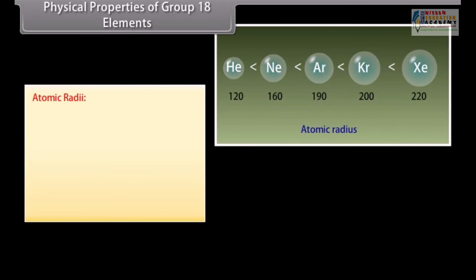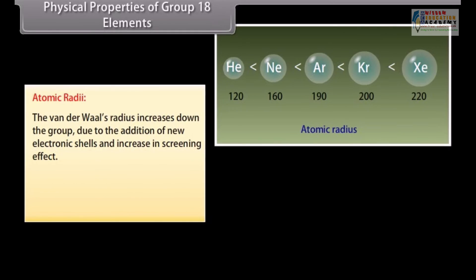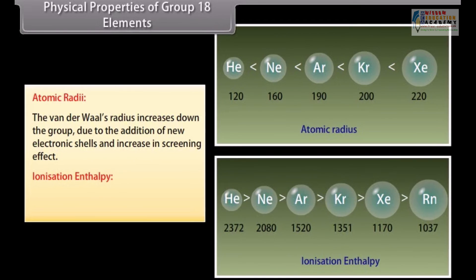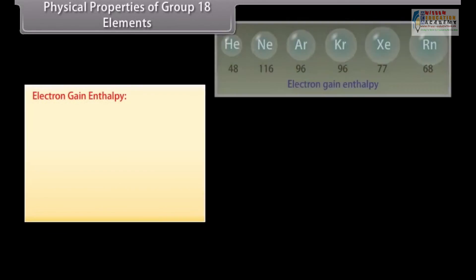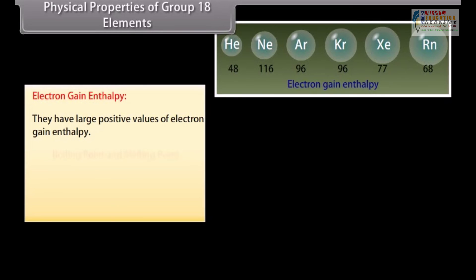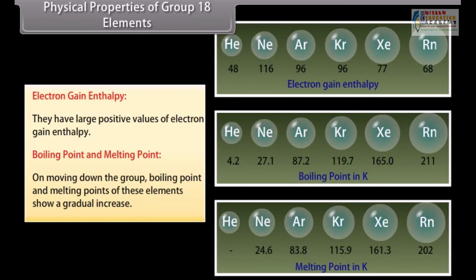In noble gases, the atomic radii correspond to van der Waals radii. As we go down the group, the van der Waals radius increases due to the addition of new electronic shells and increases in screening effect. The ionization enthalpies of noble gases are very high due to their stable configurations, and decrease with increase in atomic number from helium to radon. Since noble gases have stable electronic configurations, they have no tendency to accept electrons and therefore have large positive values of electron gain enthalpy. Boiling points and melting points show a gradual increase down the group due to a corresponding increase in the magnitude of van der Waals forces of attraction.